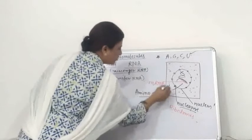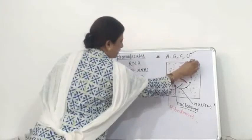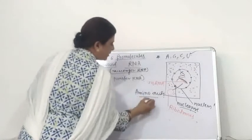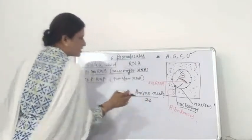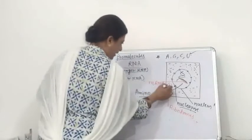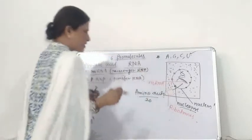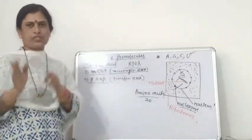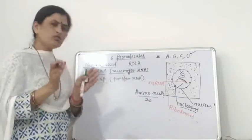This amino acid pool is present in the cytoplasm. There are 20 different types of amino acids, also present inside the cytoplasm of the cell. These amino acids are initially in an inactive stage.